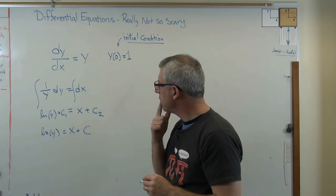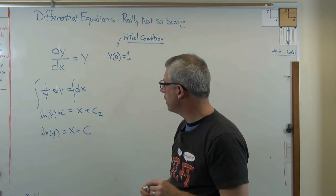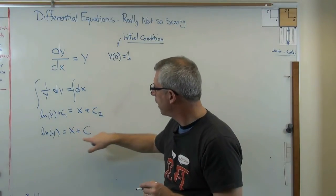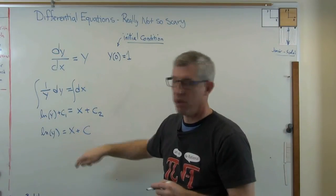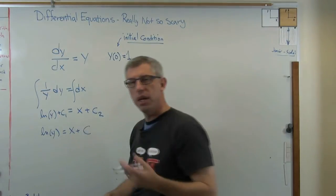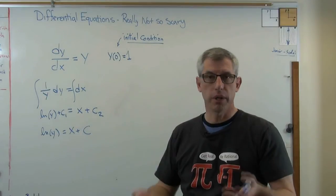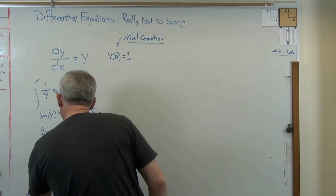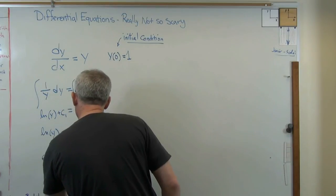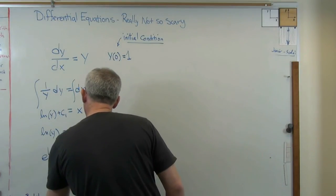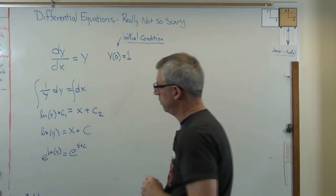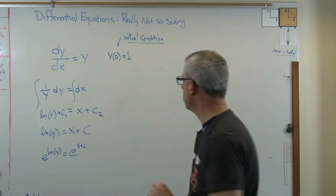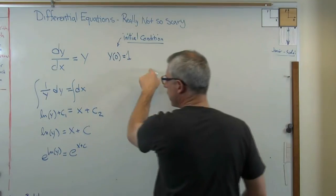Well, gosh, what am I going to do here? It would be awfully nice if I could make that y equals something, not natural log of y equals something. Well, what's the inverse function to natural log? Well, it's e to the something. So e to the natural log of y is going to be equal to e to the x plus c power. This doesn't look like it's getting easier, but it is. Trust me.